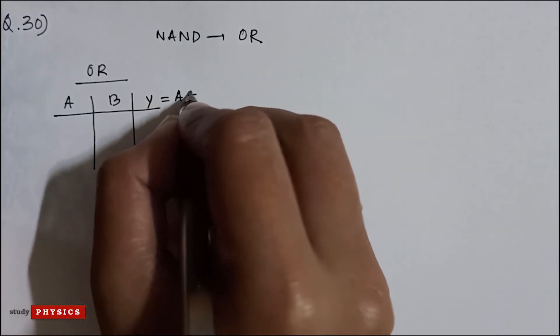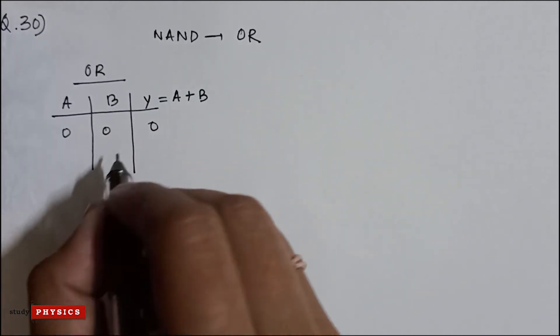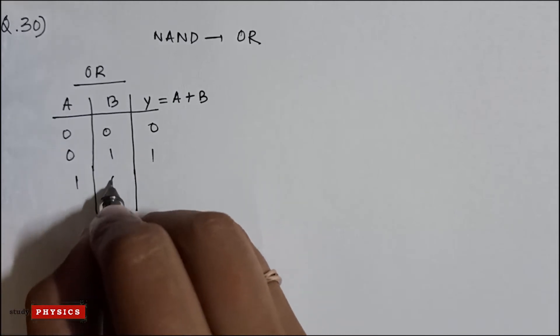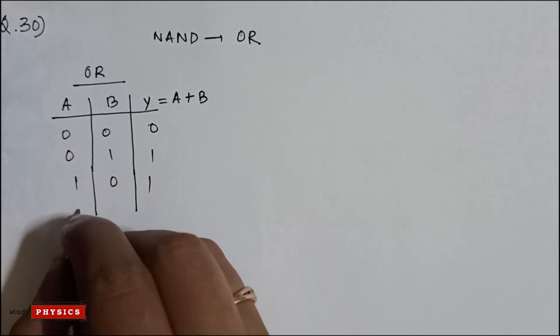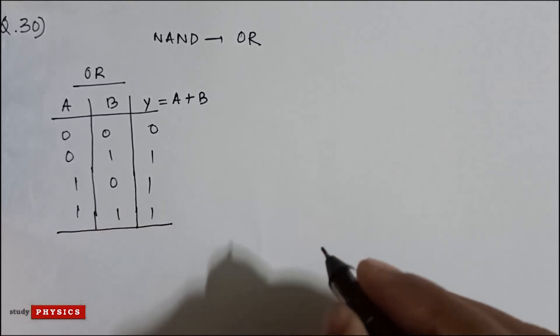output. So Y is A or B. So this is 0,0 gives 0; 0,1 gives 1; 1,0 is 1; 1,1 is also 1.